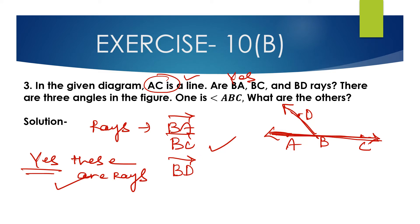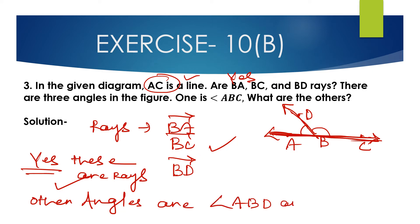There are 3 angles in the figure. One is angle ABC, which is a straight angle equal to 180 degrees. The other two angles are angle ABD and angle DBC. Rays BA, BC, and BD form these angles.